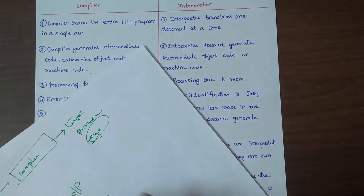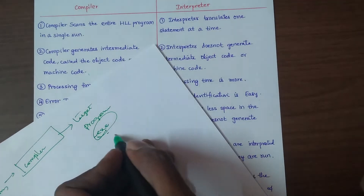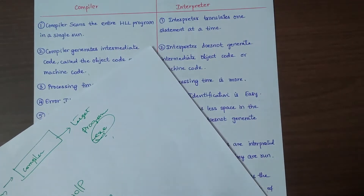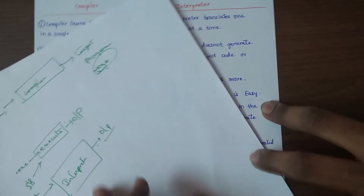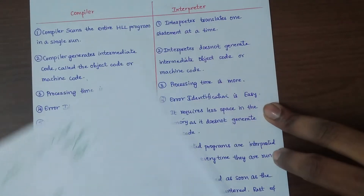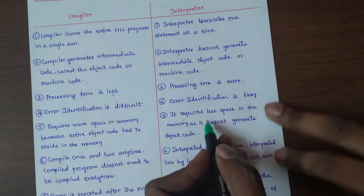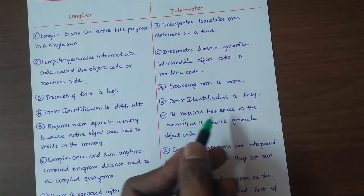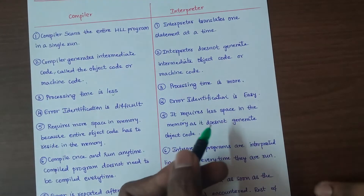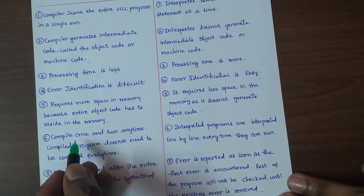Since the interpreter does not produce a separate object code file, you do not need to store it. Therefore, the interpreter requires less space in memory.